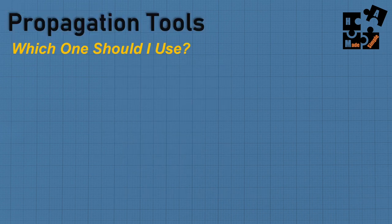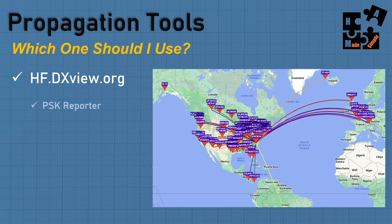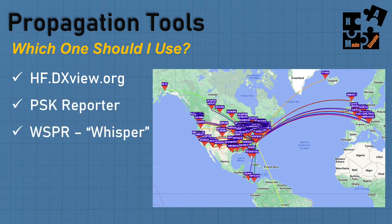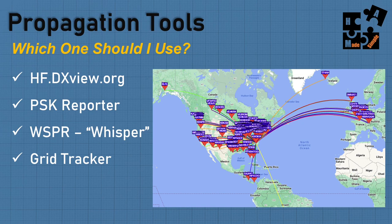The first tool I use is hf.dxingview.org. The others are PSK Reporter, Whisper, and GridTracker. Think of hf.dxingview.org as the 'before' tool — what's going to work, what's probable. PSK Reporter is the 'after' tool — what have I accomplished. Whisper is for setting up my antennas and seeing directionality of my signals. GridTracker is for those doing FT4 and FT8 in real time — it's a must-use tool if you're regularly using FT4 or FT8.